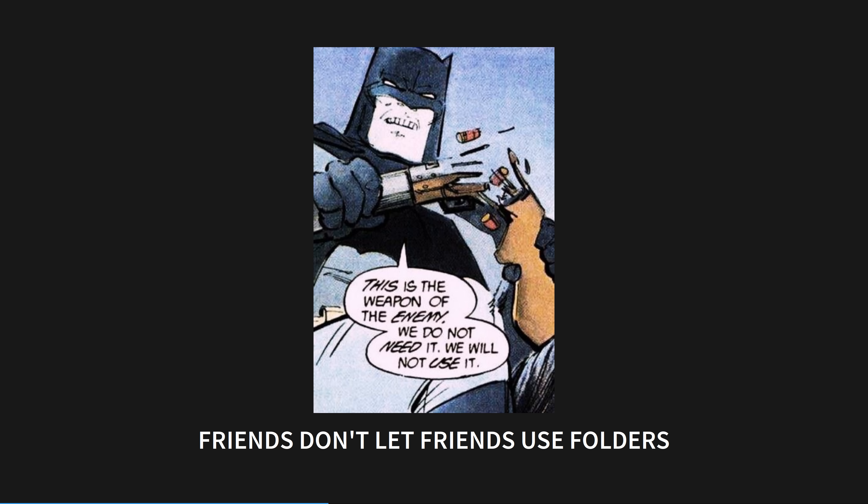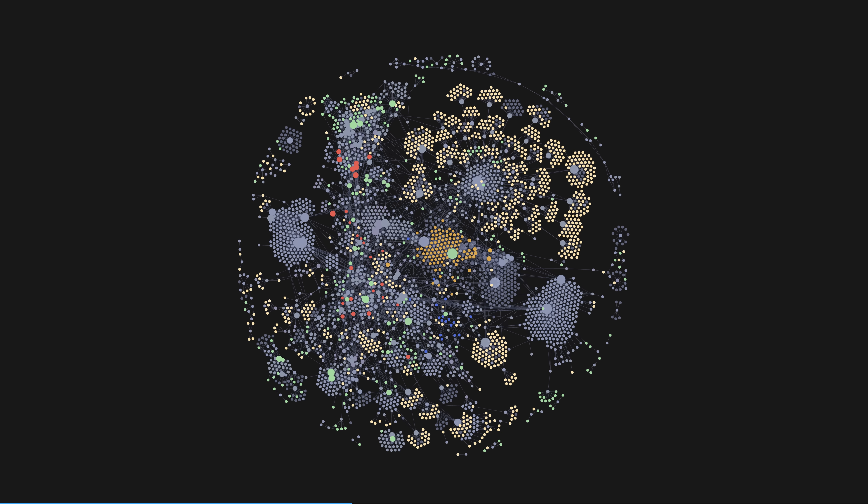We'll start with the curse of folders. I consider folders the weapon of the enemy in Obsidian because they do not play well with most of the other good parts of the system. It is a trap nearly every new Obsidian user falls into, and I was no exception. Folders feel like a legacy feature that works differently than all others. You add tags or links inside your notes, interwoven with the content, but folders exist outside them and can't be tagged or linked to. A file can only exist in a single folder, whereas you can link to many other files or use multiple tags — and most damning of all, they don't show up on the beautiful graph view.